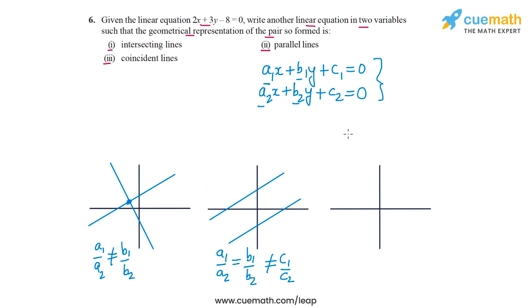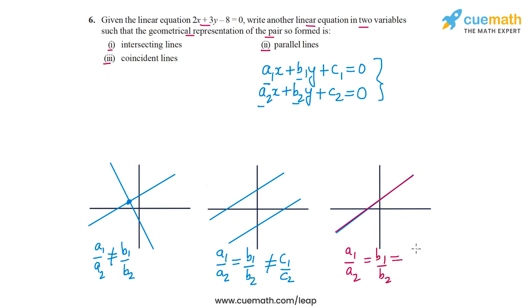A third possibility is that the two lines are identical — they are coincident, lying on top of one another. This will happen if a1 by a2 is equal to b1 by b2 is equal to c1 by c2, meaning all three ratios are equal.